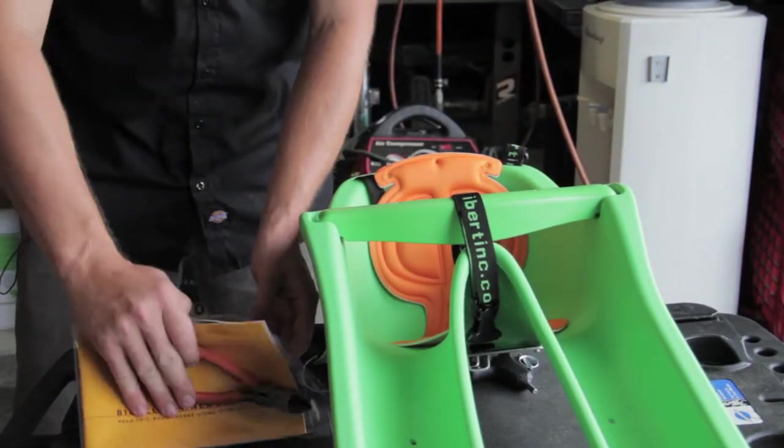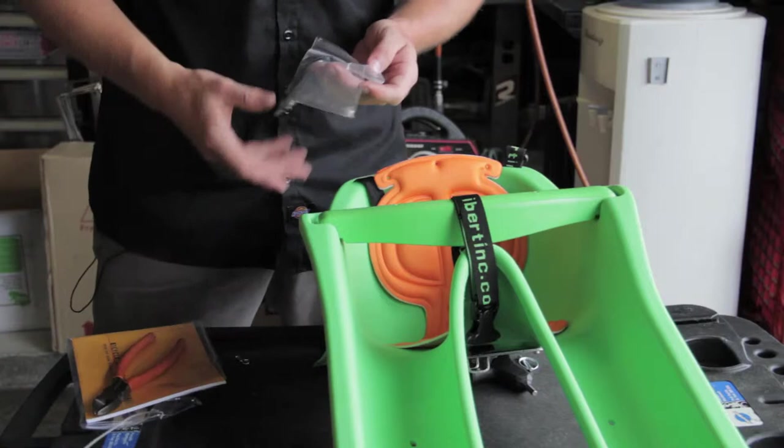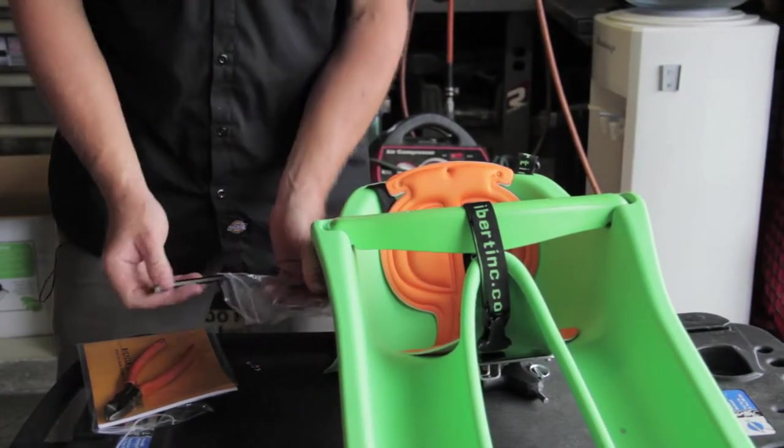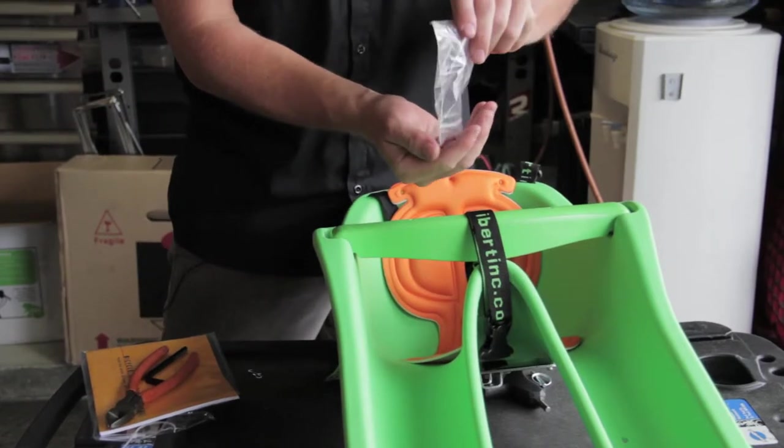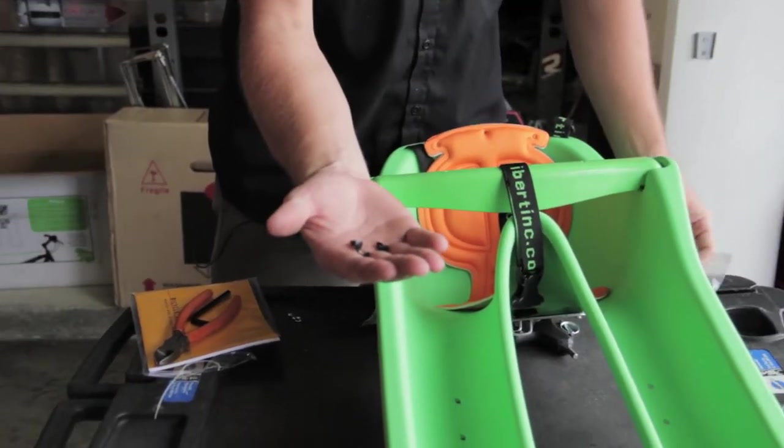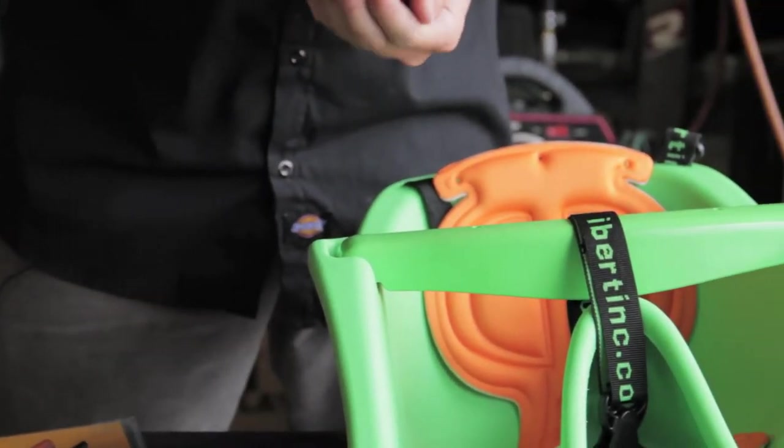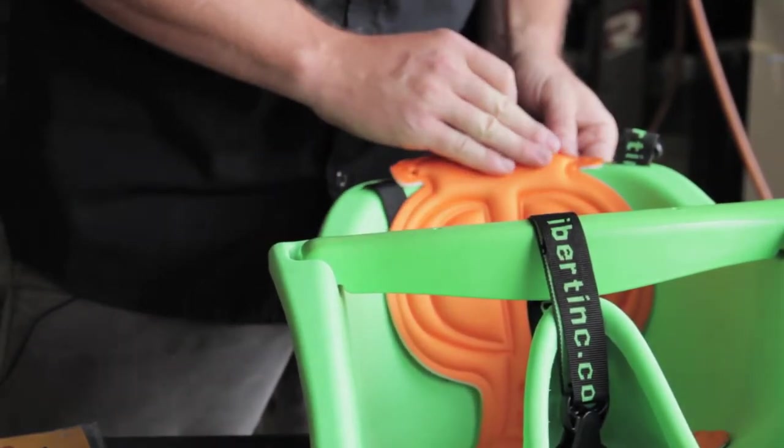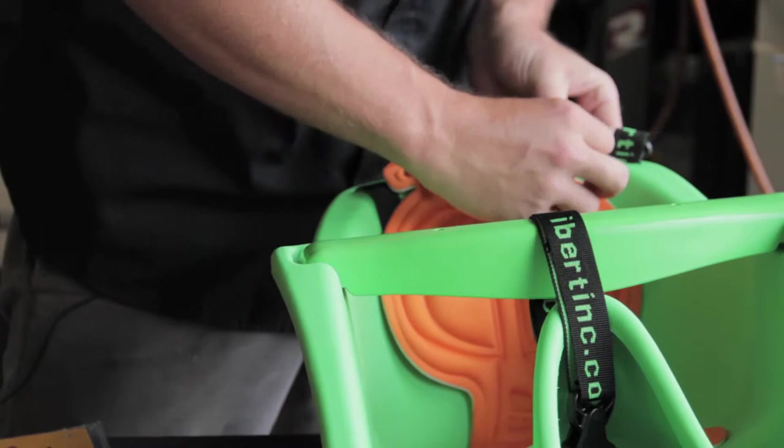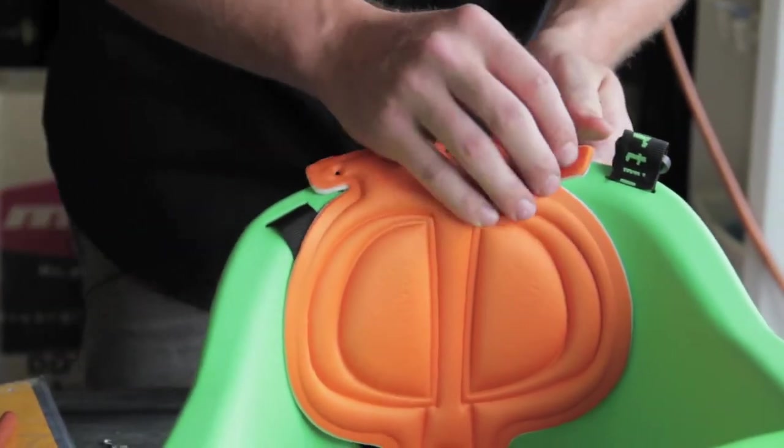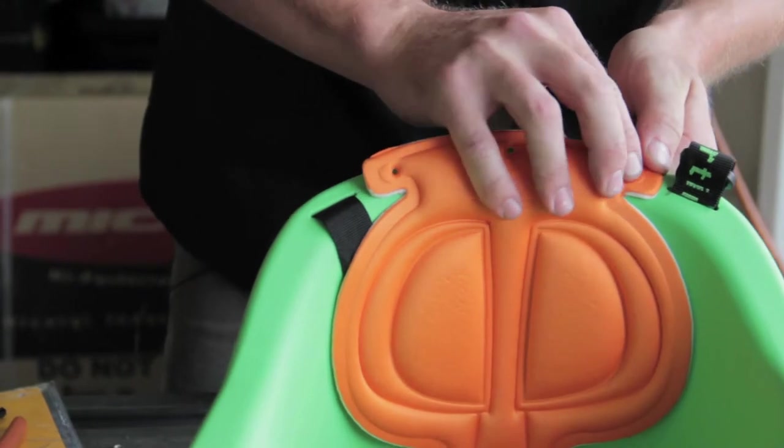Then in the hardware bag are three small black push clips. And these are going to go into the three holes at the back of the cushion. So just push these into place.